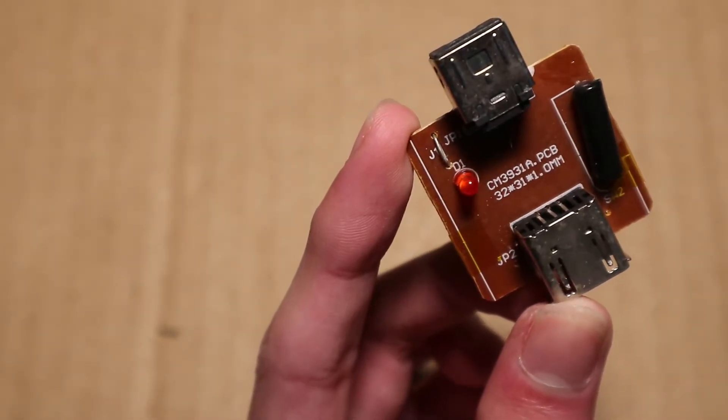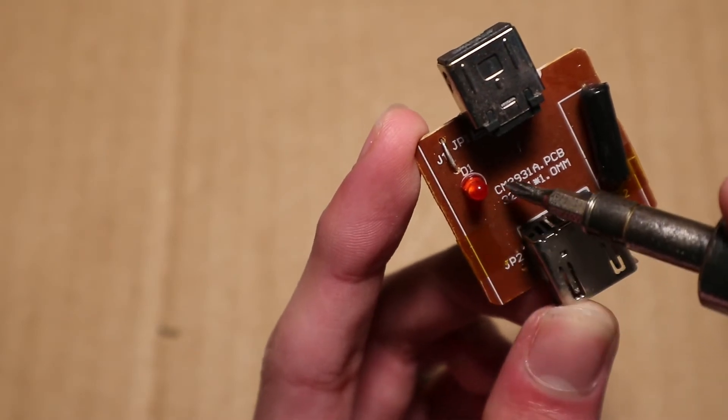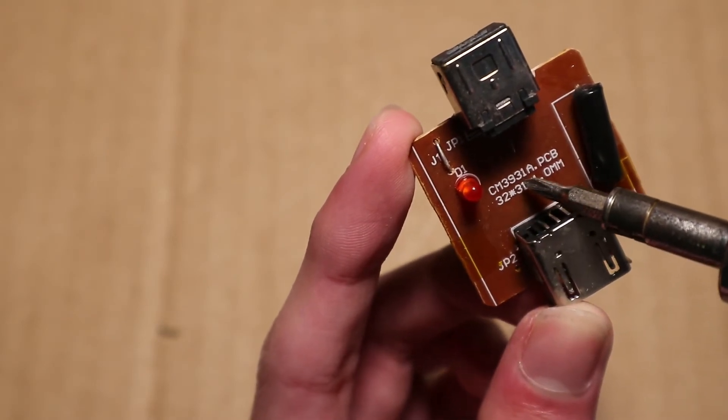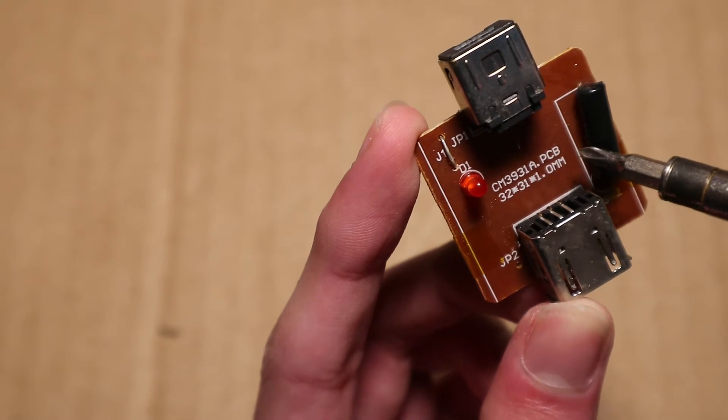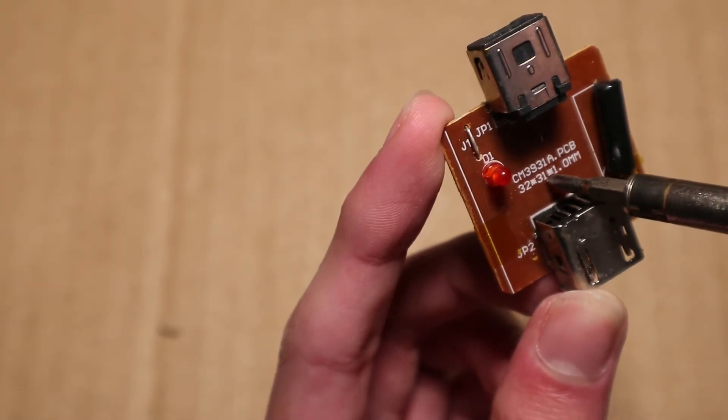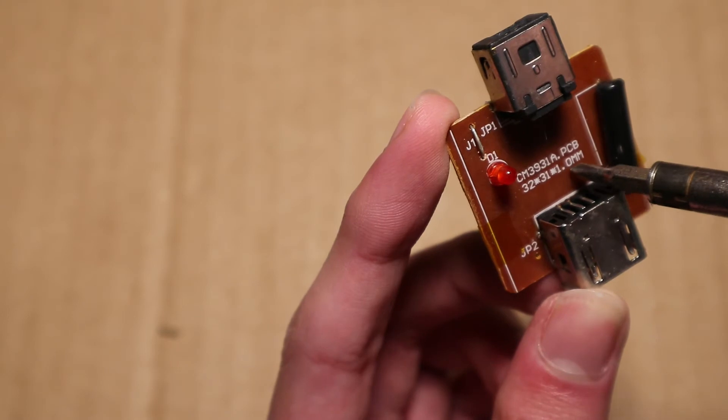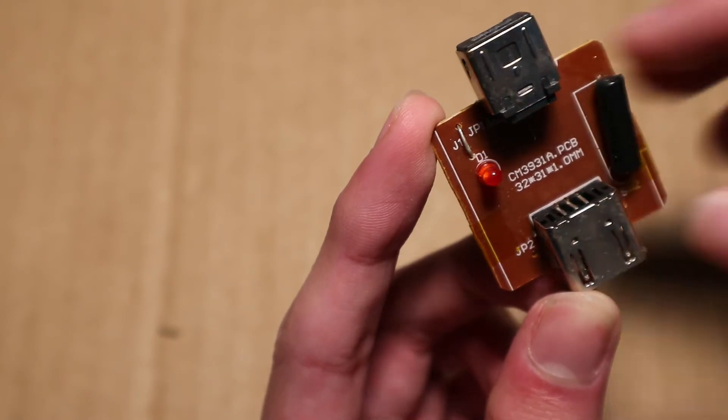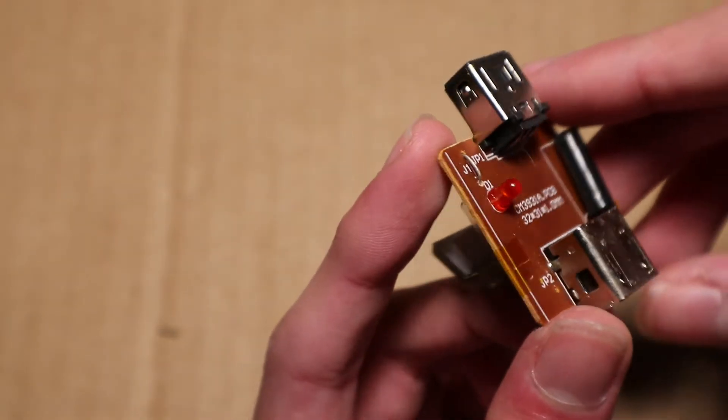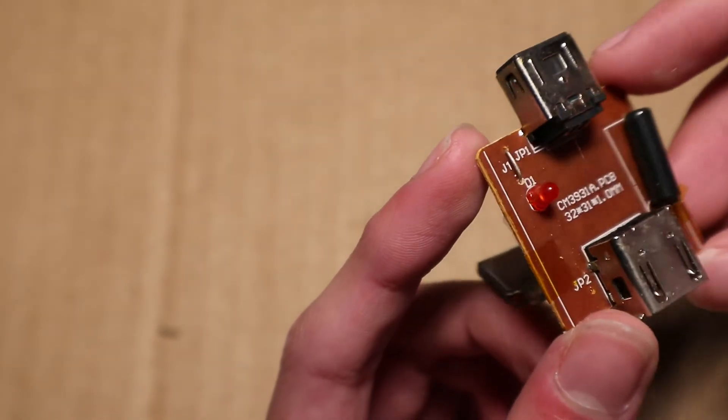Also, there is a model number, CM3931A PCB. And also, 32 by 31 by 1.0 millimeters, which probably is the dimensions of this circuit board. And I will measure the dimensions of this circuit board now.